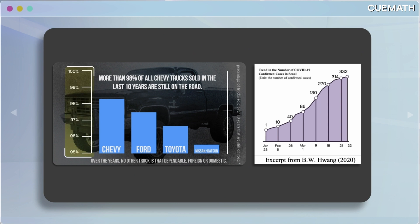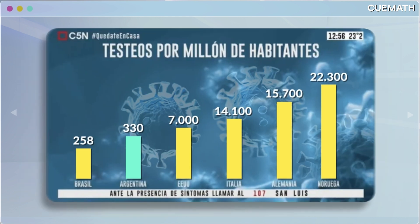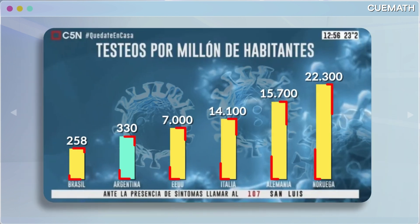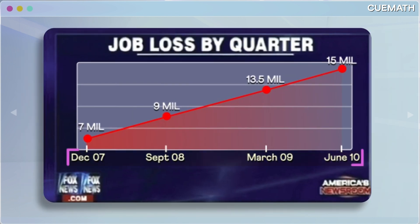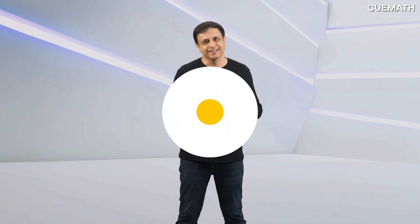Watch out for those numbers and labels on the axes. Give the visuals a good look. Dig around for any cherry-picked data. And most importantly, ask yourself: what is the graph trying to show? Or, what is it trying to hide?